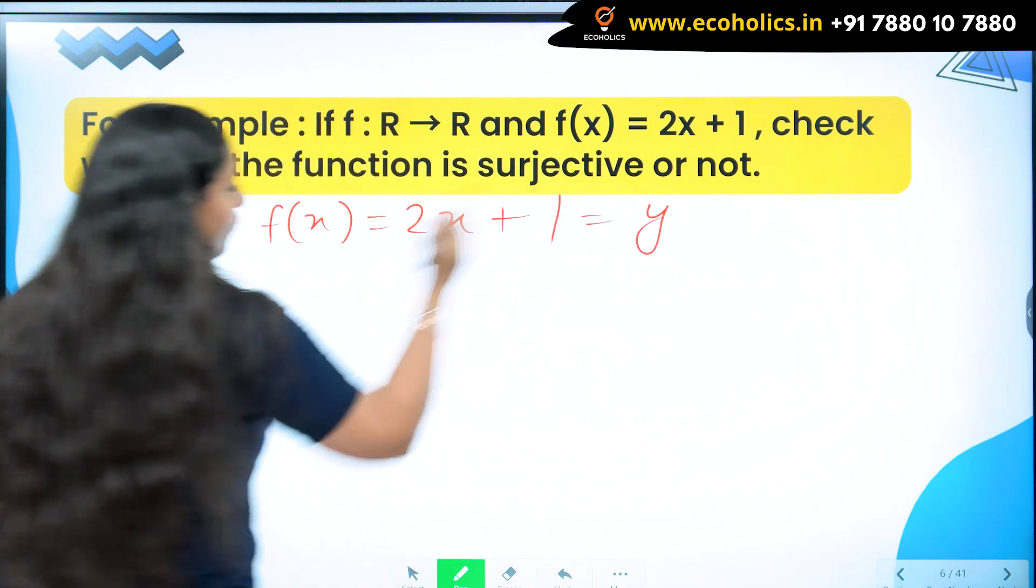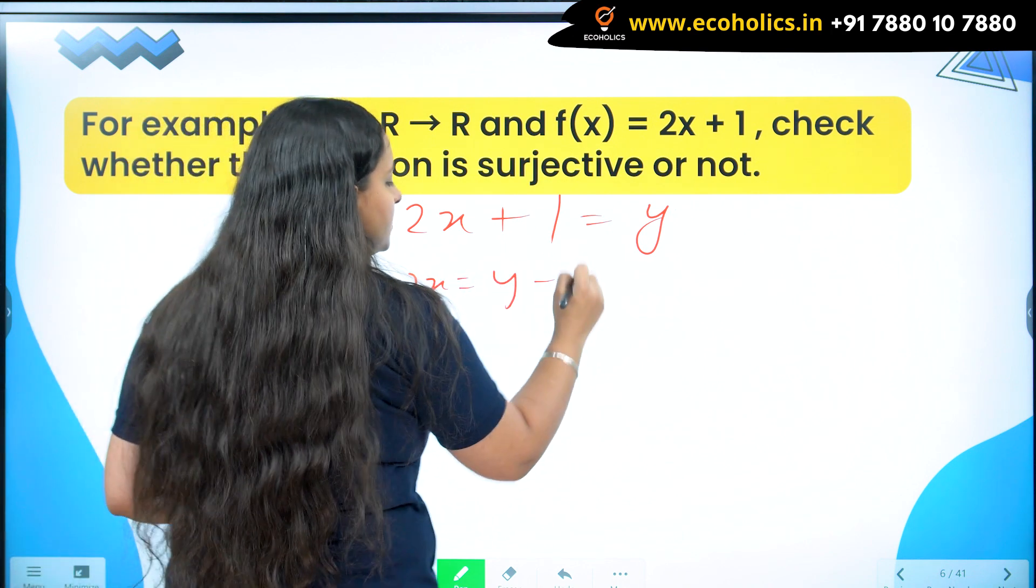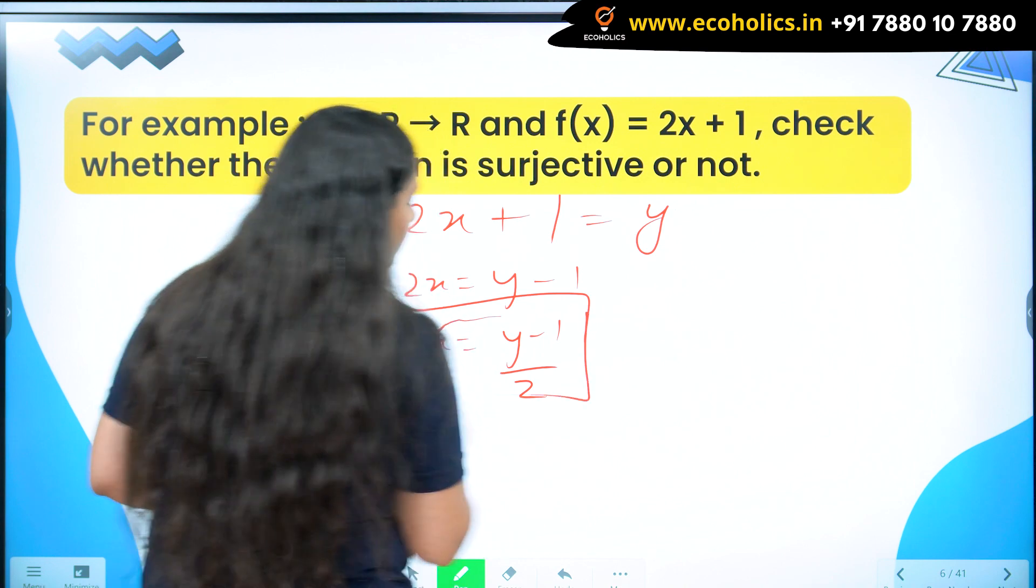It's equal to y. So let's convert it. 2x equals y minus 1, and x equals y minus 1 by 2. So this is the inverse function.